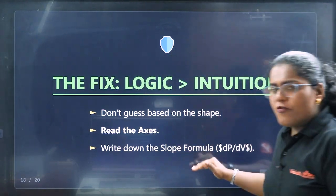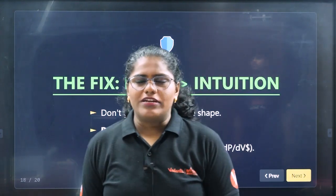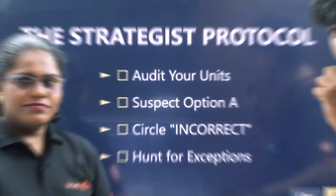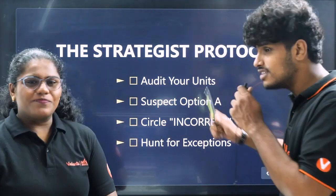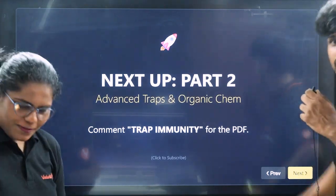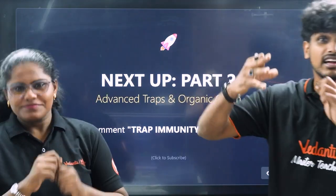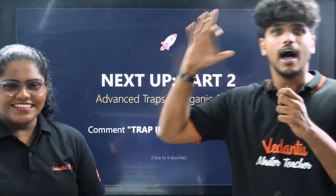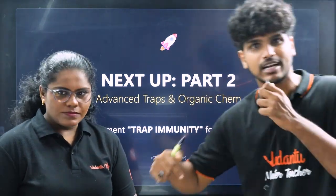To summarize: think logically in the exam. Audit your units, suspect impulsive options, circle the word 'incorrect,' watch for trend exceptions, and verify graph axes and slopes. This was Part 1. Part 2 covers advanced traps including organic chemistry. Stay subscribed to see those traps, and comment below to get access to the PDF summary.